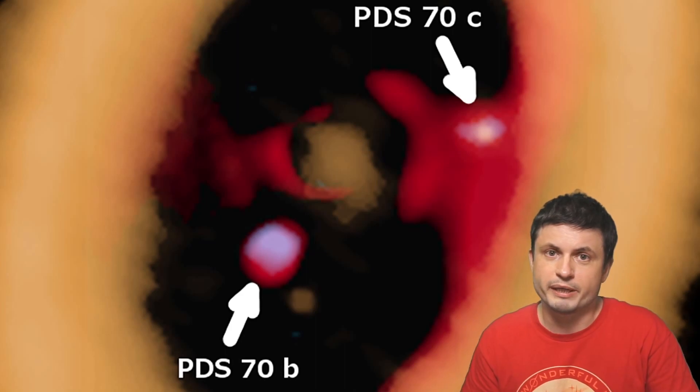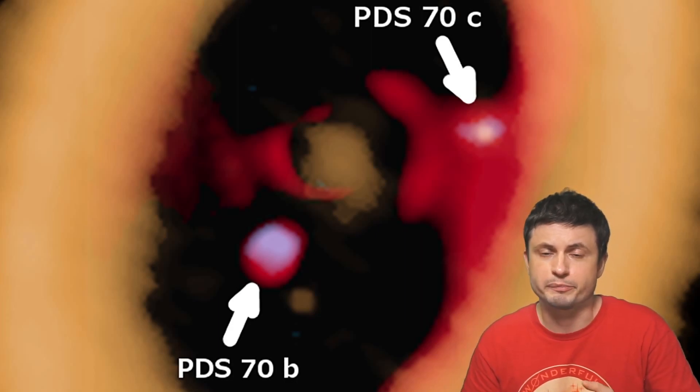Objects like Io, Ganymede, Europa and so on were created in a very different manner from our moon. But very likely in a similar manner to what we think is happening in these exoplanets and distant star systems such as PDS-70.